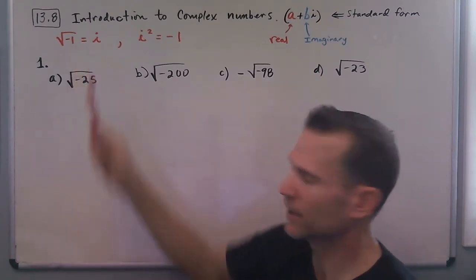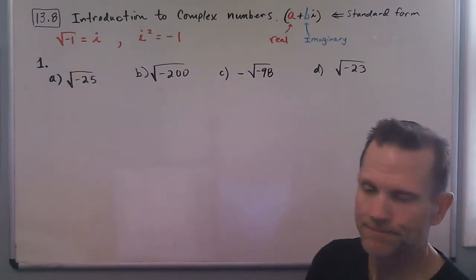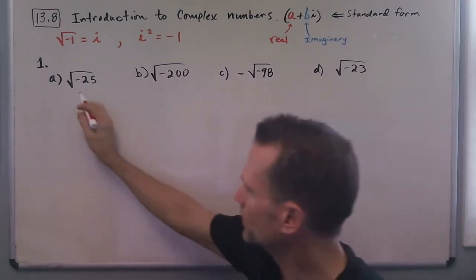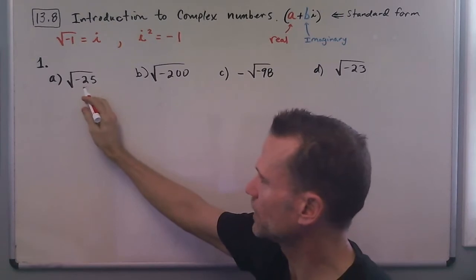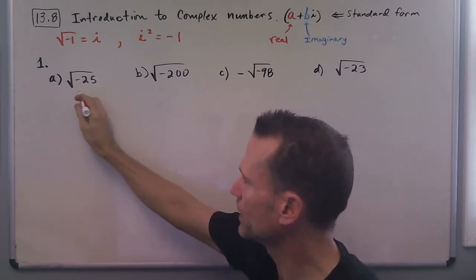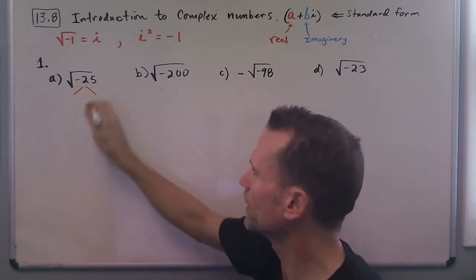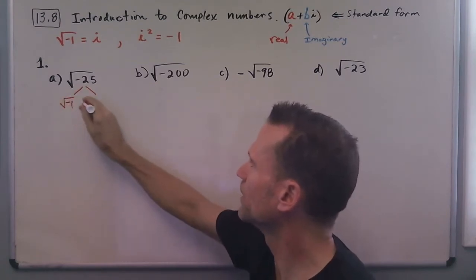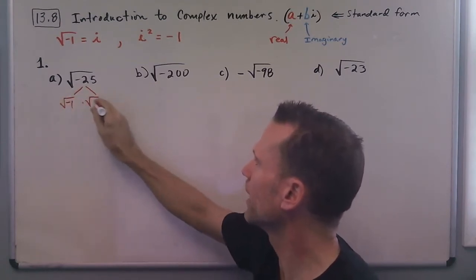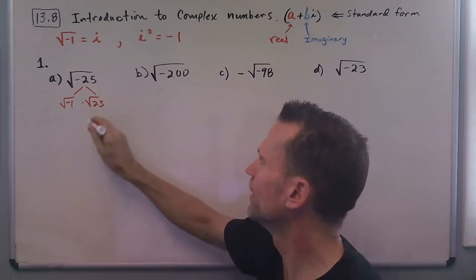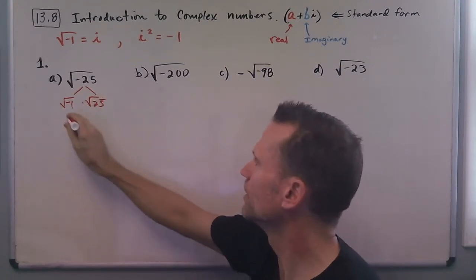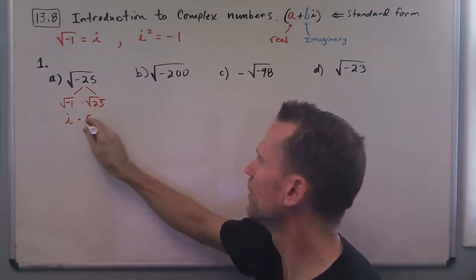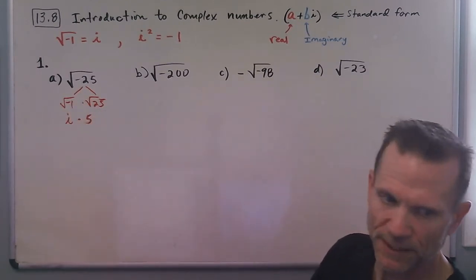Since we know the square root of negative 1 is equal to i, we can think about this, and I'm not going to break this down each time like this, but we have the square root of negative 1 times the square root of 25, and then what we get here is we get i times 5, but what we want to do is write that out as 5i.